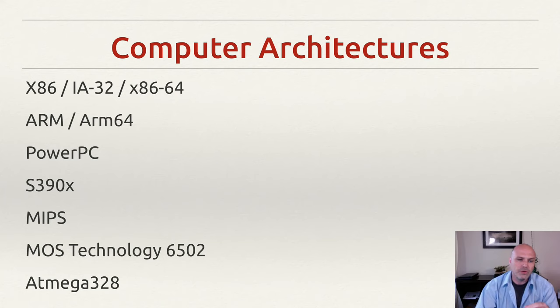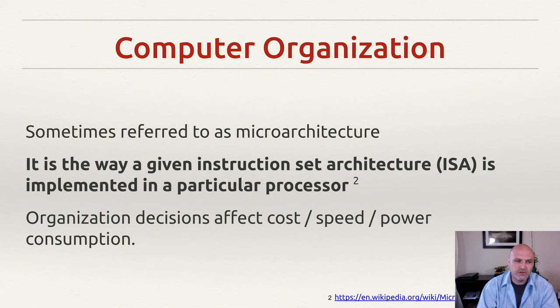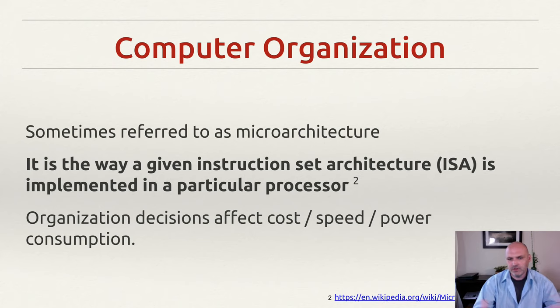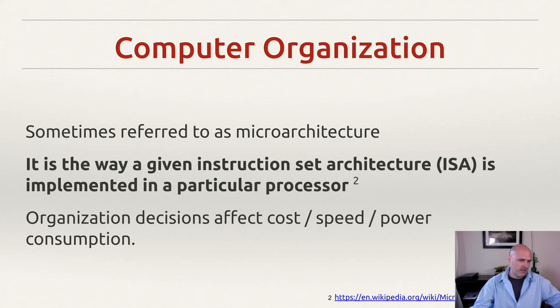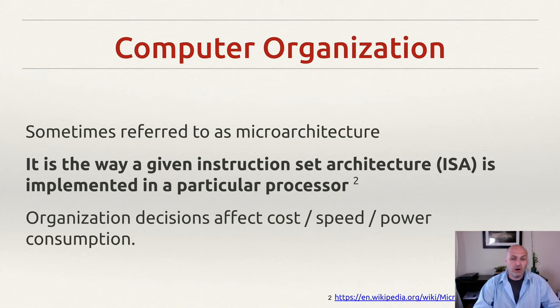Those are different architectures, but they only tell half the story. The other big thing to understand is that the organization of the architecture is where speed, cost, power, and all those details start coming into play. Remember with the homes — you can have a colonial, but how you set up that colonial is your organization. Is the garage under the house or attached to the side? Is there a full basement or a slab? All of these details are the organization. It's the same for chip architectures — you can have two ARM-based chips and have them with completely different characteristics in terms of cost, speed, and power consumption. This is sometimes referred to as the microarchitecture of the chip.